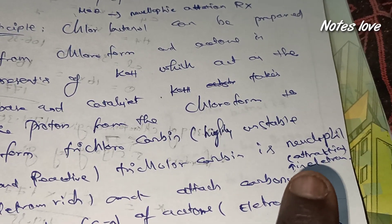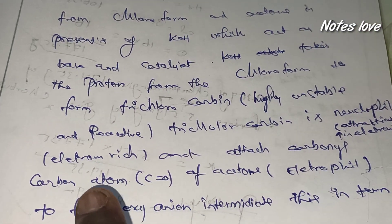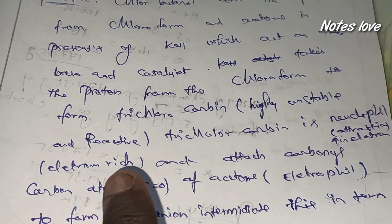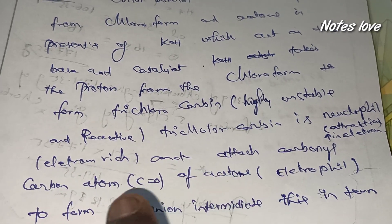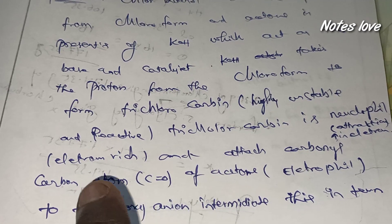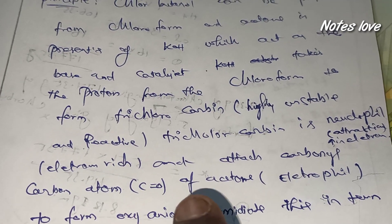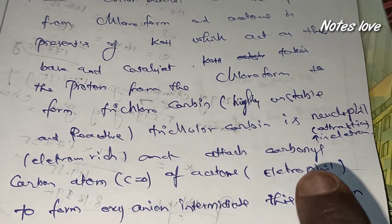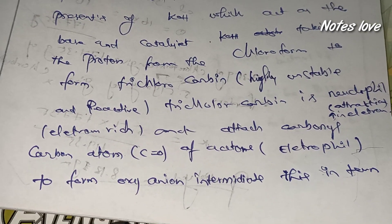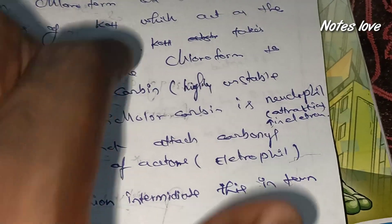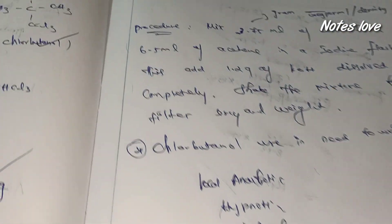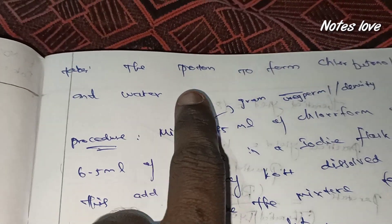Each atom carbonyl carbon atom, carbonyl atom means C double bond O, of acetone is electrophilic to form an oxyanide intermediate. This form takes a proton to form chlorobutanol and water.